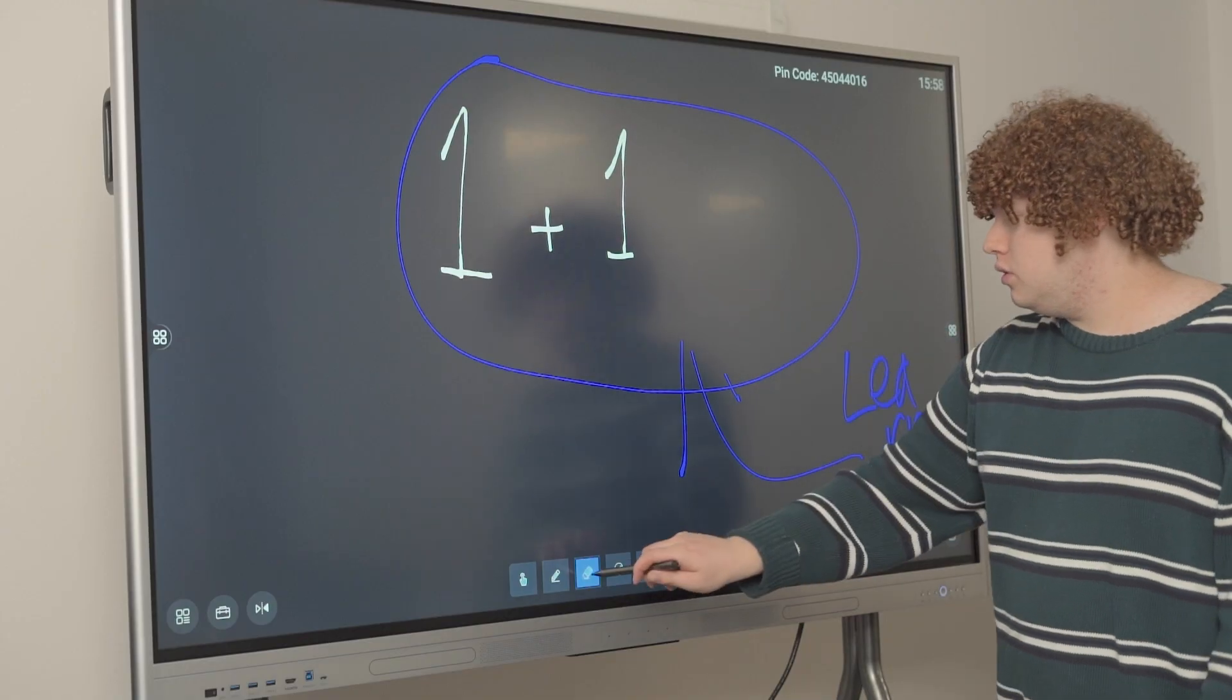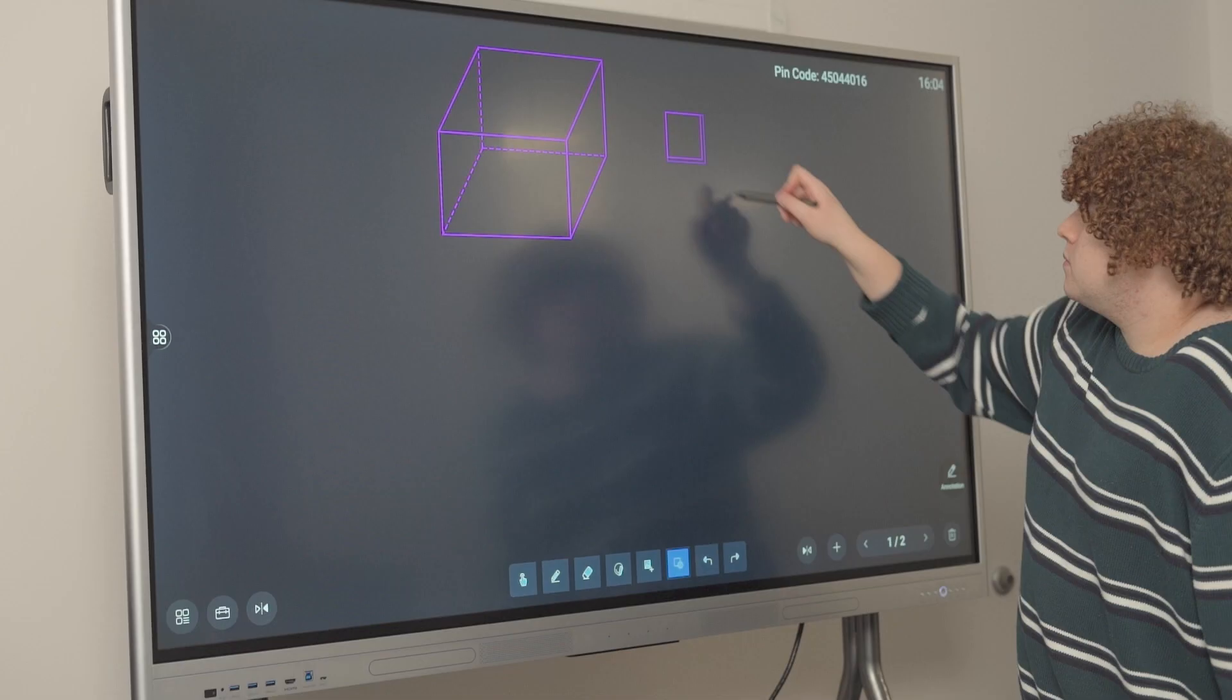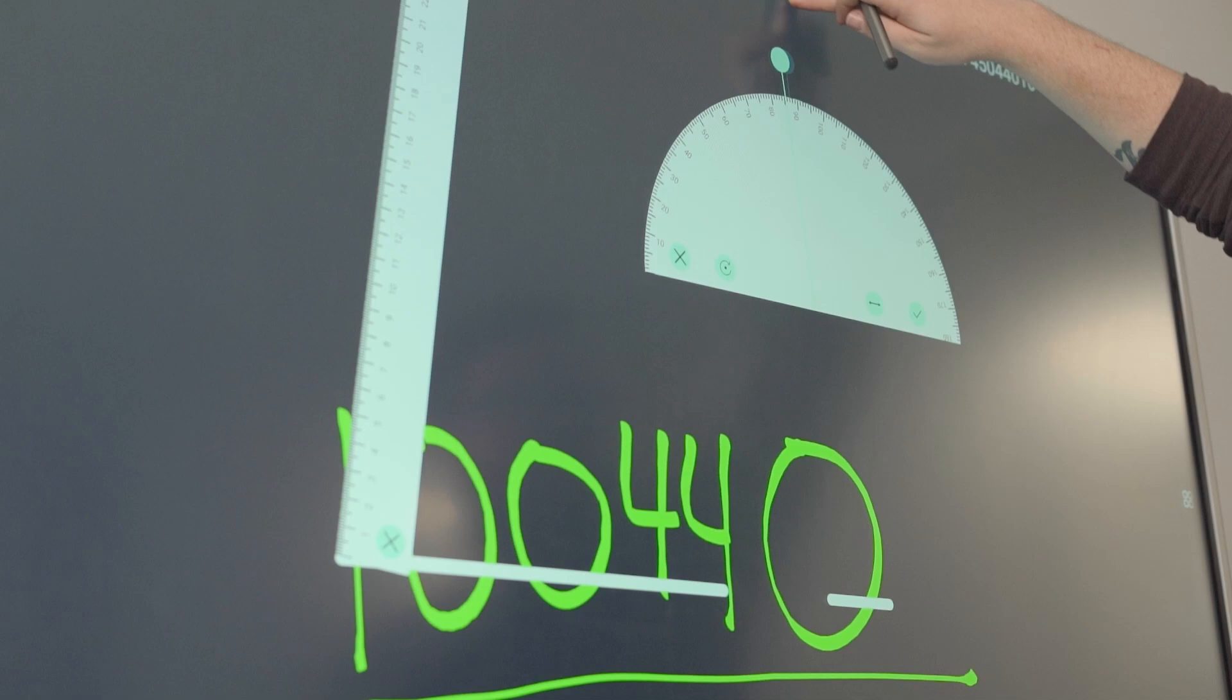Or if you want to erase the whole page, just slide the erase button like so. You can add all types of shapes and even tools for math such as rulers, compasses, and protractors.